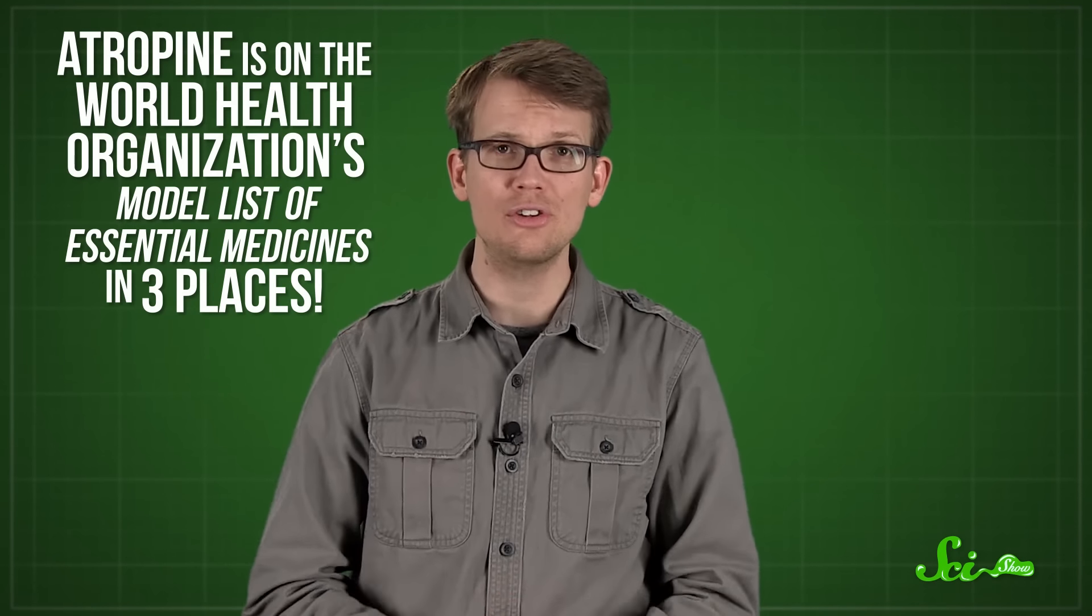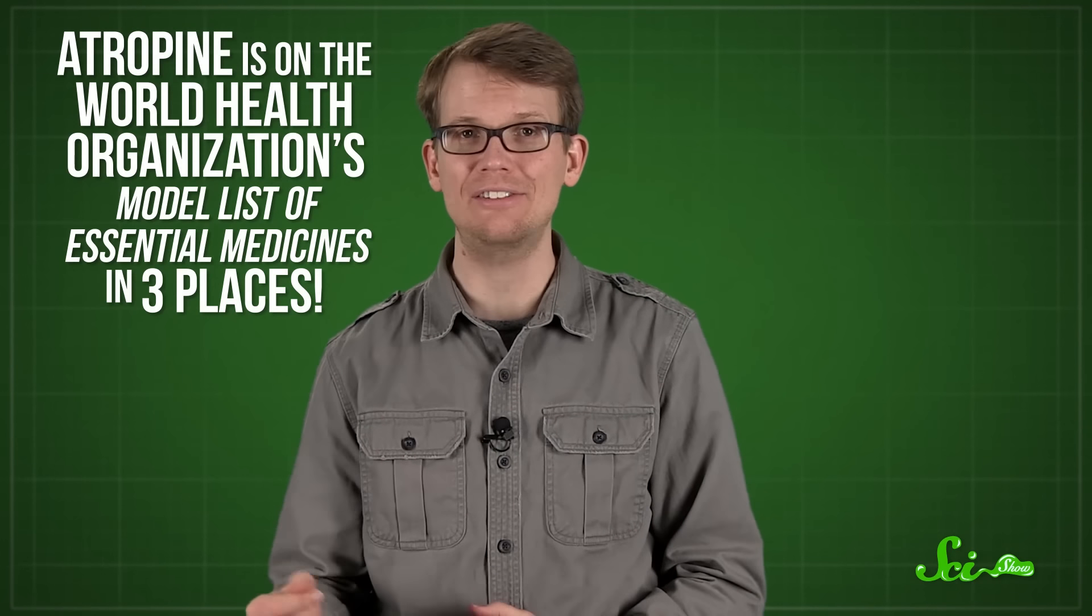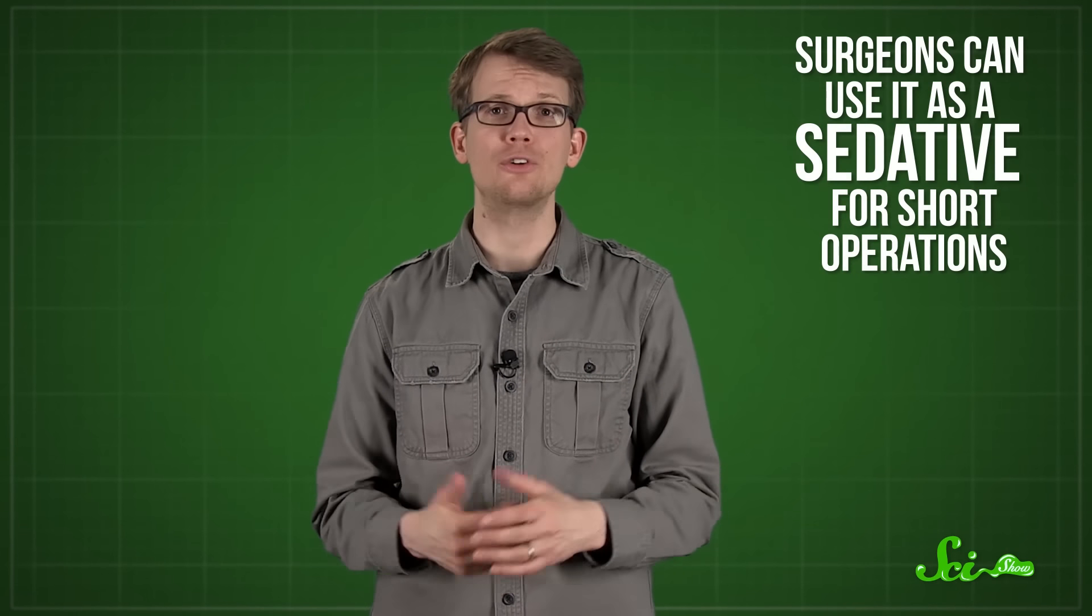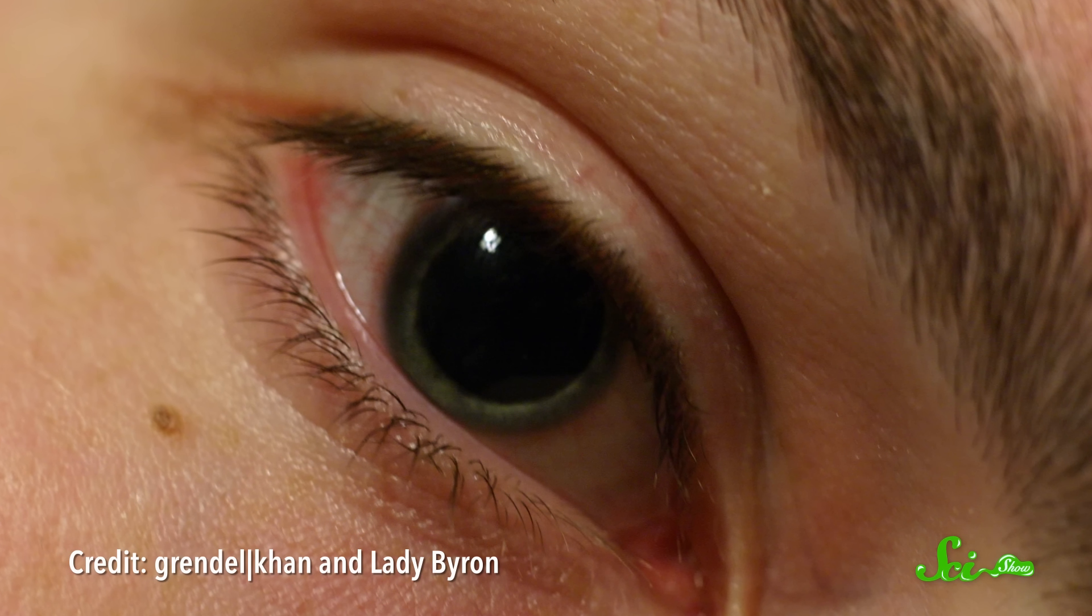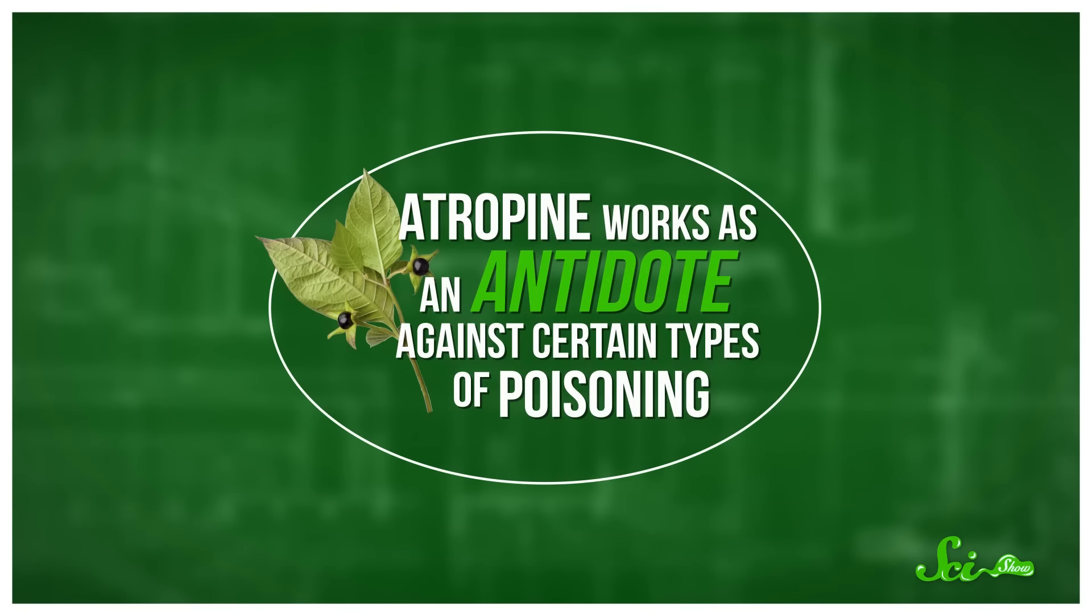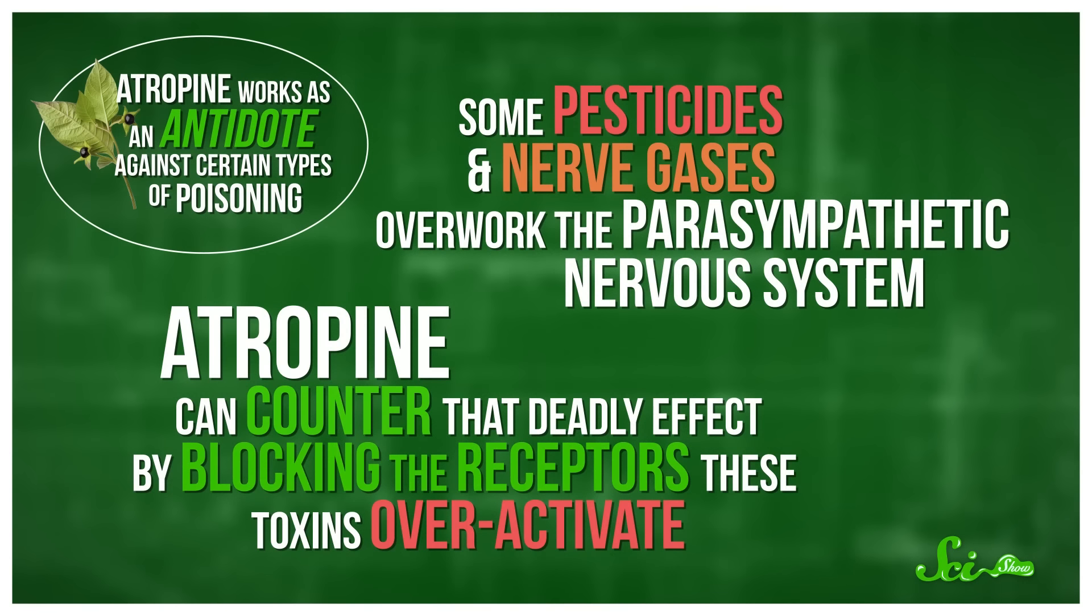It's actually on the World Health Organization's model list of essential medicines in three separate places. Surgeons can use it as a sedative for short operations, or to dilate the pupils to gain easy access to the back of the eye. And despite being extracted from a plant so toxic, atropine works as an antidote against certain types of poisoning. Some pesticides and nerve gases overwork the parasympathetic nervous system, and atropine can counter that deadly effect by blocking the receptors these toxins over-activate.